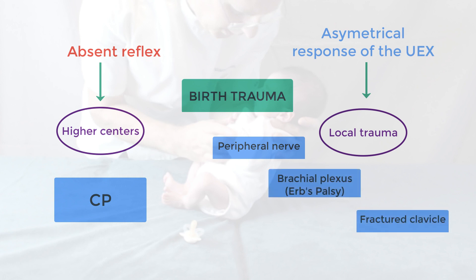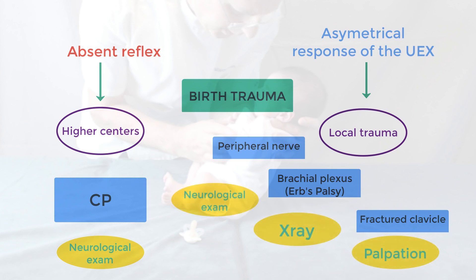An absent Moro reflex would require further investigation in the form of a thorough neurological exam. An asymmetrical Moro reflex would require further investigation in the form of local palpation, neurological exam, and x-ray.